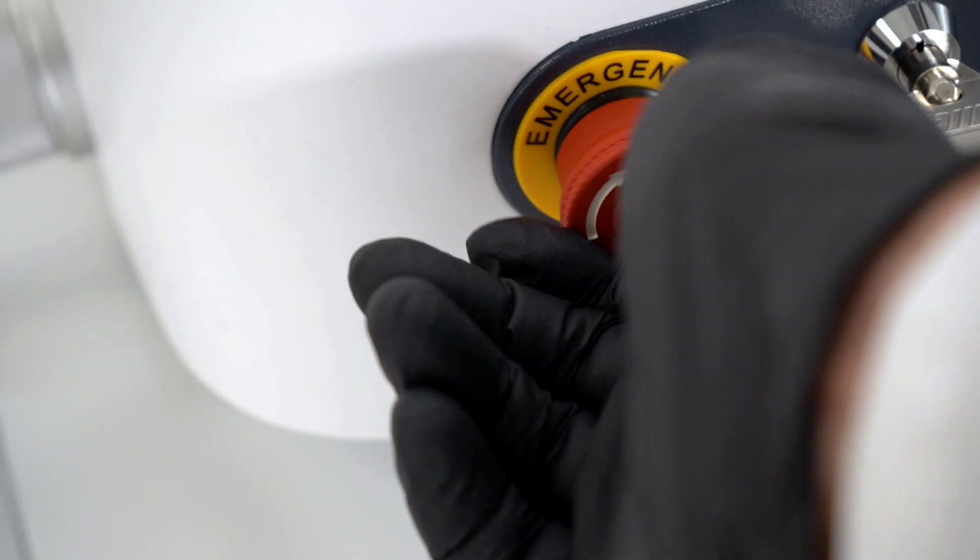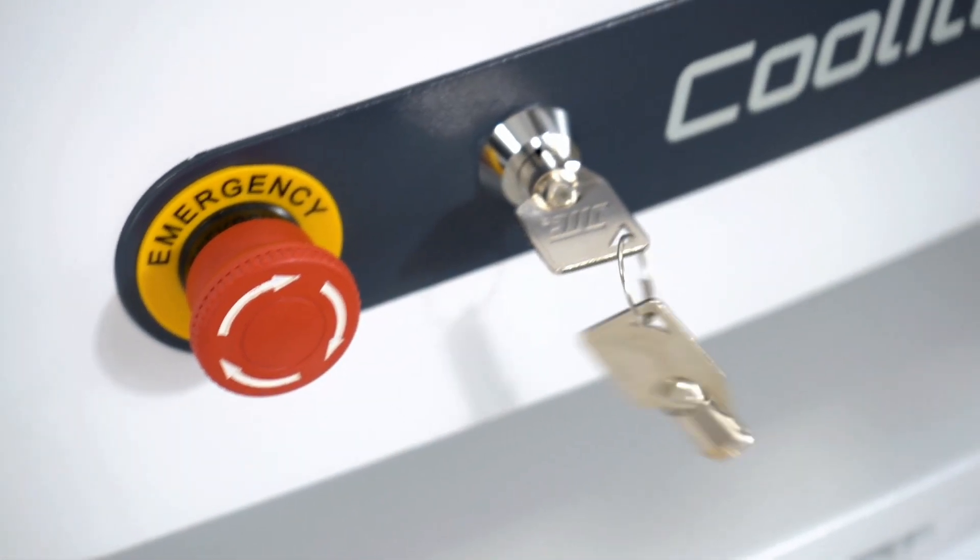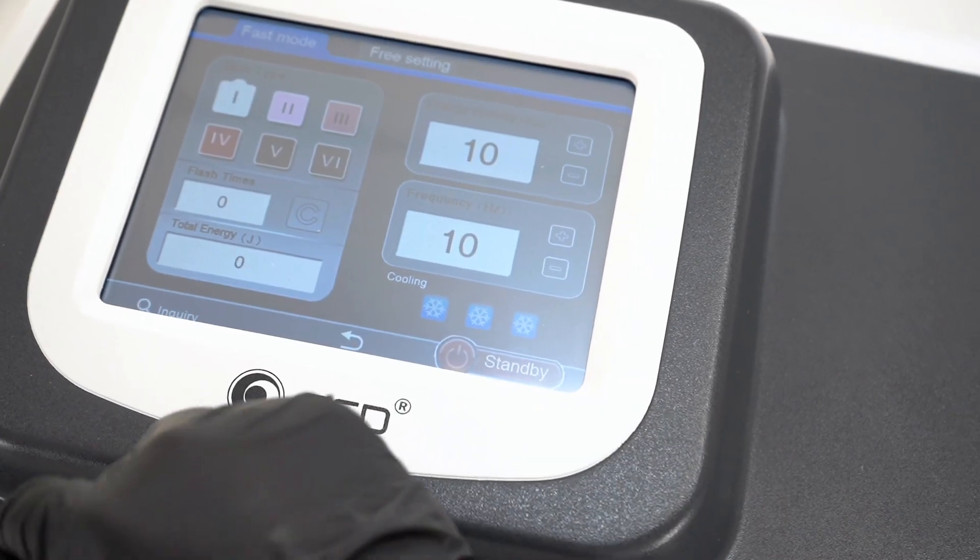Make sure the emergency button is released and the safety key is turned to the right. Once both steps have been taken, the machine will turn on automatically and the blue light will flash on the handle, while the interface will boot up.